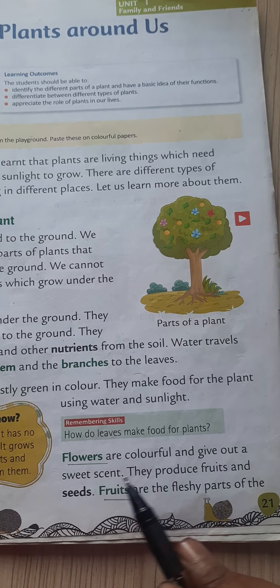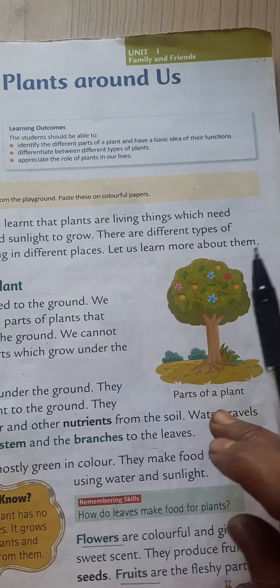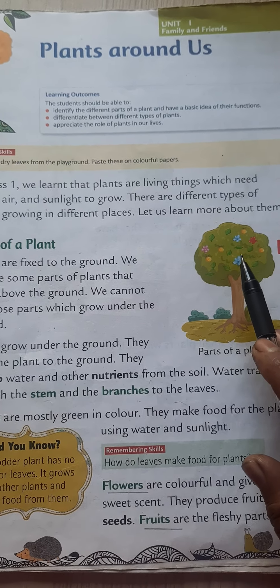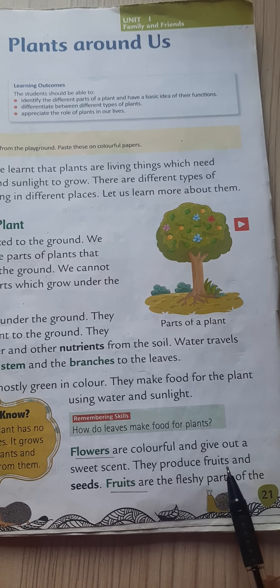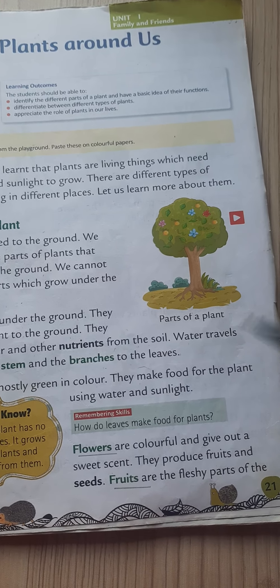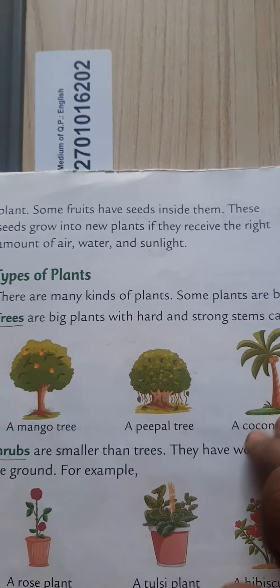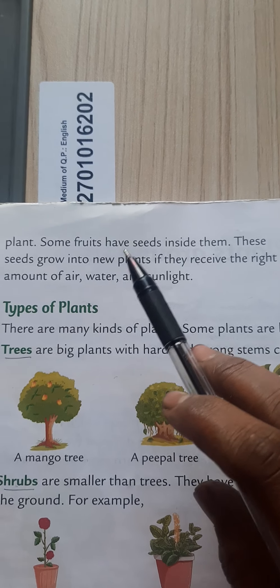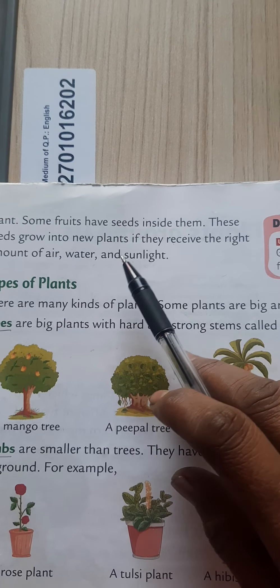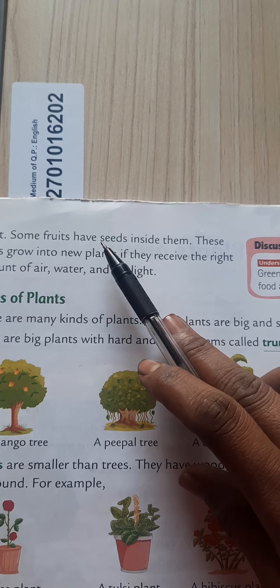Flowers are colorful and give out a sweet scent. You might have already smelled a flower — you take it and smell it and get a sweet scent. Flowers produce fruits and seeds. Fruits are the fleshy part of the plant. Some fruits have seeds inside them. For example, the mango tree gets a flower, the flower converts into a fruit, and the fruit contains a seed inside.